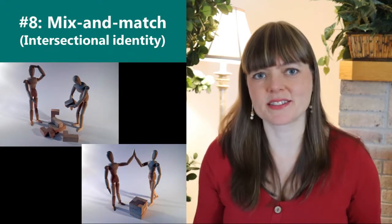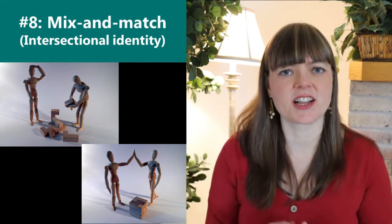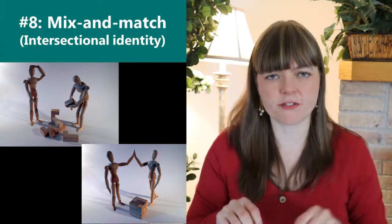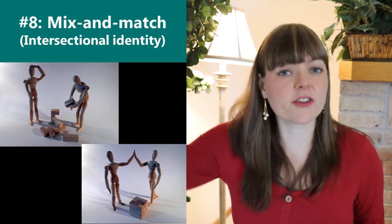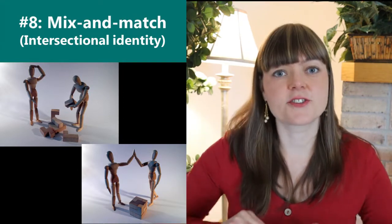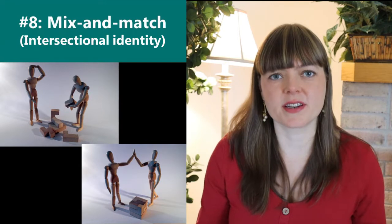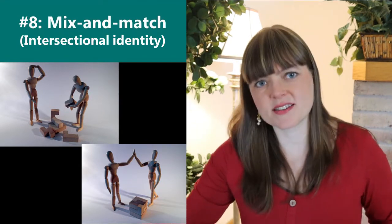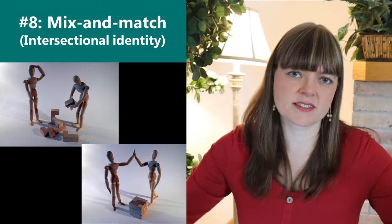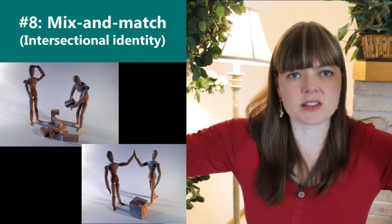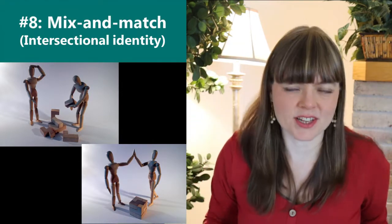The eighth mechanism is the mix and match mechanism — the article calls this intersectional identity. This is where you use a bunch of different mechanisms together. You take the other seven mechanisms and create an identity that triangulates your probability of being a human being. Since each mechanism has its own type of weakness, combining them increases the overall validity of the system for establishing identity.